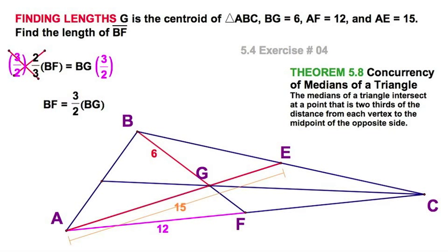So we come back to this. Aha! So again, if BG is two-thirds of BF, then BF is three-halves, or one-and-a-half times BG. And we'll just put some numbers in there. And you can see three-halves, or one-and-a-half times six is nine. So that's our segment.